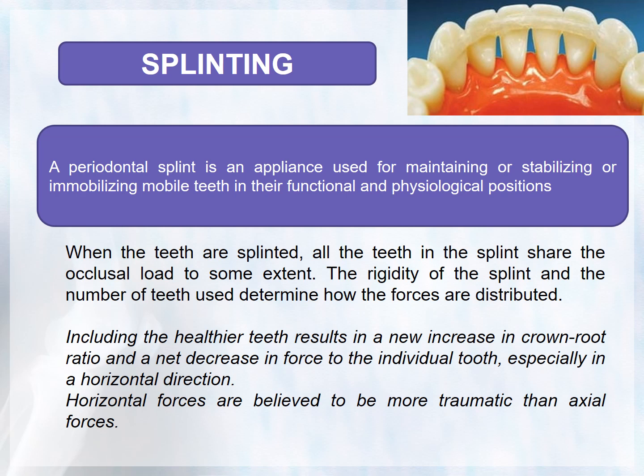What is a periodontal splint? It is an appliance used for maintaining, stabilizing, or immobilizing mobile teeth in their functional and physiological positions. Splinting stabilizes the teeth as a unit, including healthy teeth, and redirects forces from individual teeth to the unit as a whole. A fractured tooth or bone requires splinting for at least 6 to 8 weeks, while teeth with no fracture may require splinting for 2 to 3 weeks. In the case of avulsion, a semi-rigid splint of 7 to 10 days may be required.